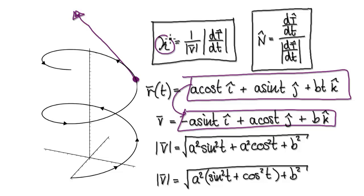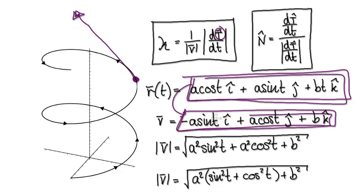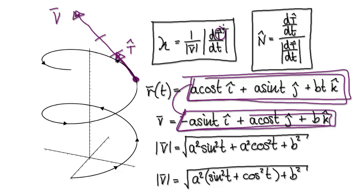To work out the curvature, we need to differentiate the unit tangent vector with respect to time. So you start out with your position vector, differentiate it, and that gives you v. To obtain the unit tangent, you need to divide v by its magnitude. Let's imagine this has a magnitude of 3, so you divide by 3, giving a length of 1 — this is your unit tangent vector. Later on we'll need to differentiate this unit tangent vector.